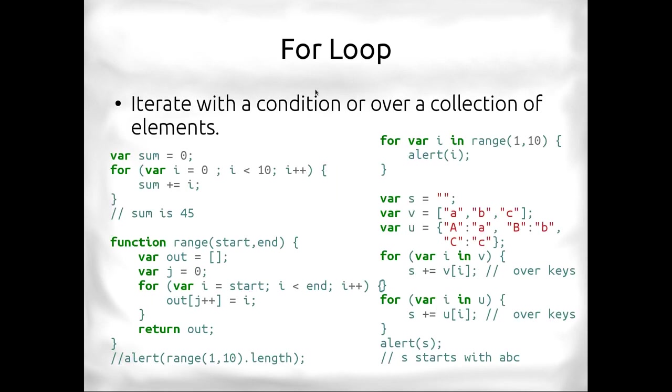Another kind of loop is the for loop. It iterates with condition or over a collection of elements. Here we've got a sum, we've got a loop body. This loop body is dependent on this sum variable and the iterator variable. We've got var i equals 0, while i is less than 10, increment i, and run this loop body. This is initialization, this is the condition, and this is what will be executed every single time.